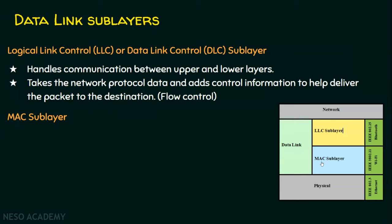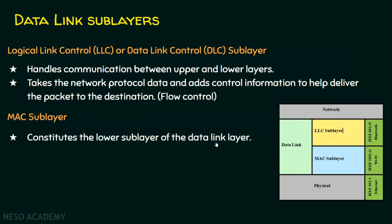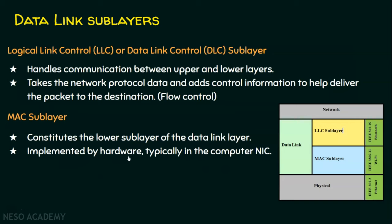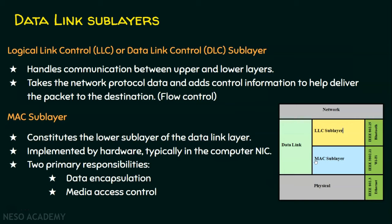The MAC sub-layer constitutes the lower sub-layer of the data link layer. It is normally implemented by hardware, typically in the computer's network interface card (NIC). The MAC sub-layer interacts directly with the physical layer and the physical medium. It has two primary responsibilities: data encapsulation and media access control.